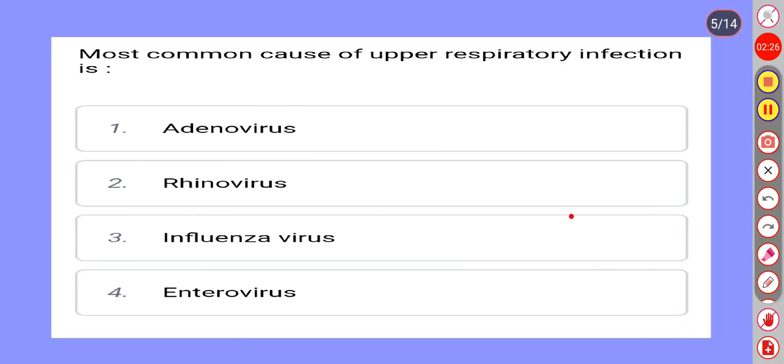Most common cause of upper respiratory infection is: Option 1: Adenovirus. Option 2: Rhinovirus. Option 3: Influenza virus. Option 4: Enterovirus.